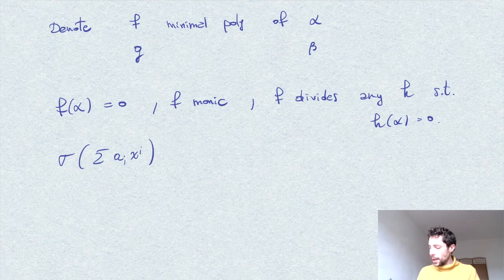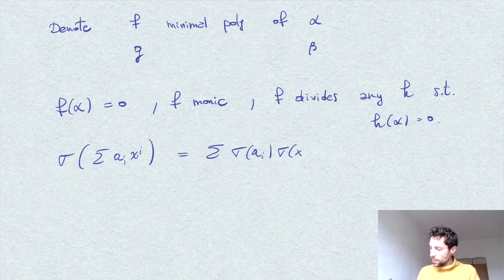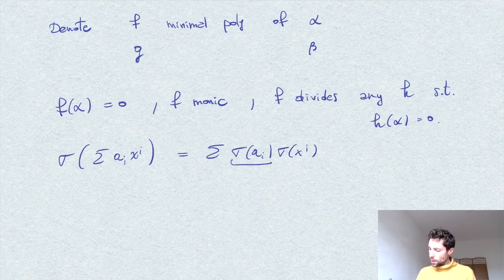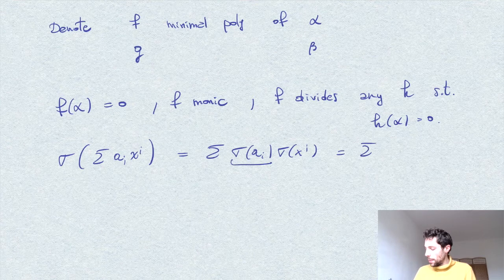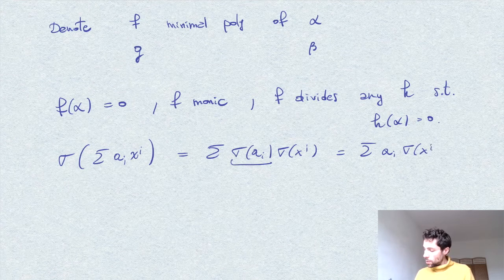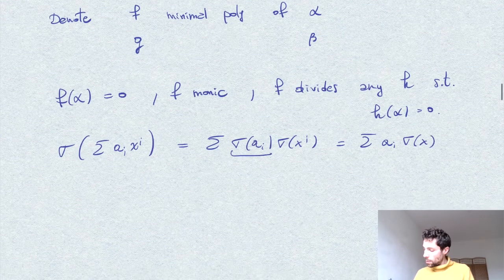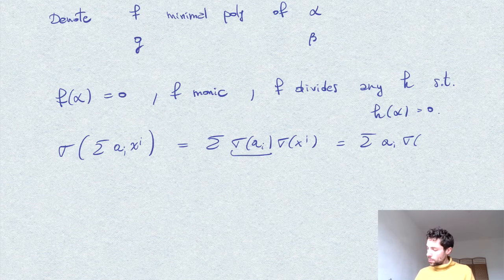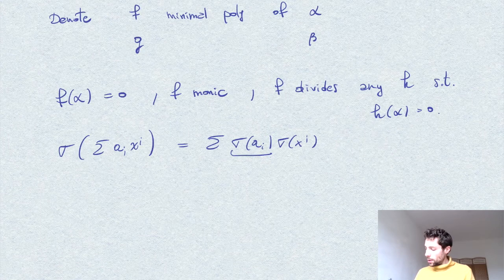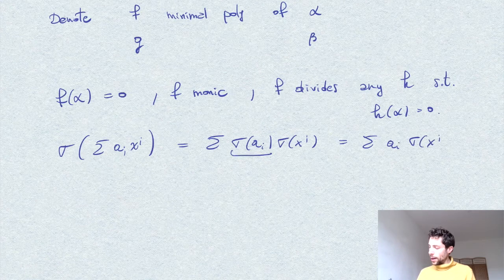This is K-linear, so σ(∑aᵢxⁱ) = ∑σ(aᵢ)σ(xⁱ), and these are elements of the field which are fixed, so σ acts as the identity here. This can be written as ∑aᵢσ(x)ⁱ.